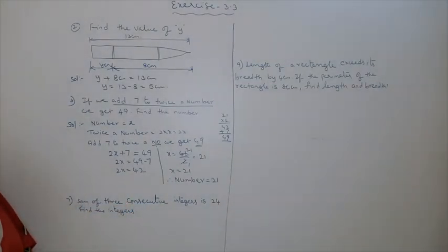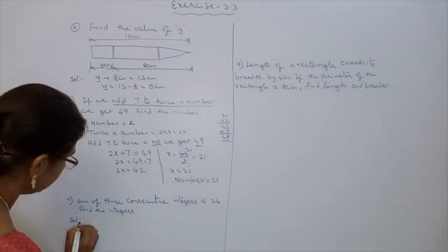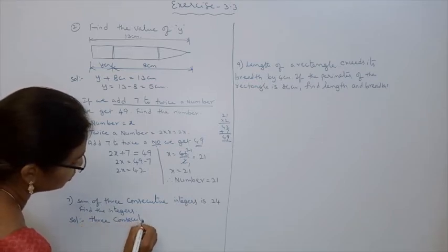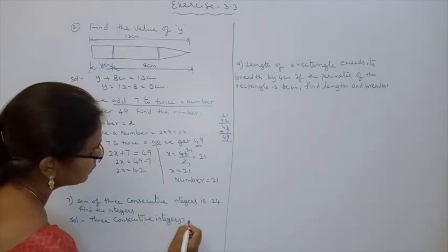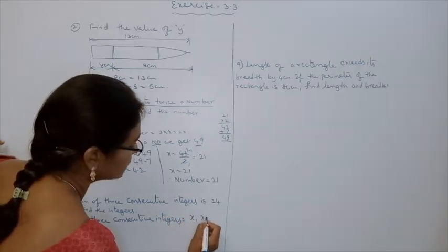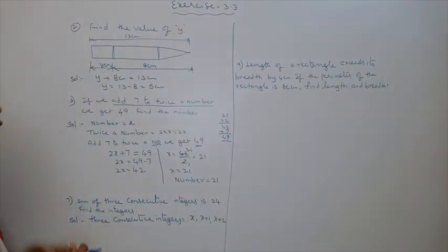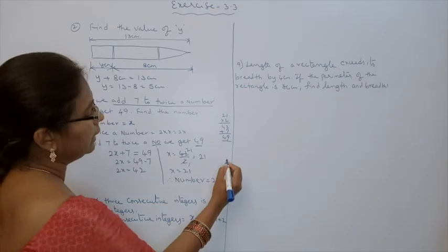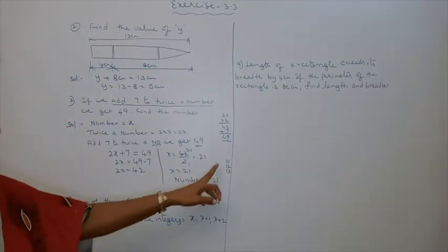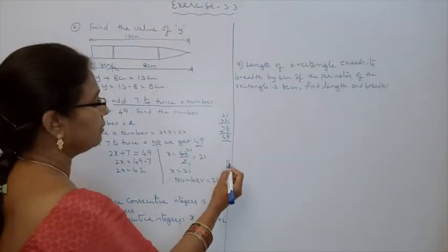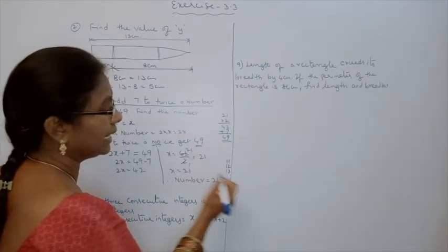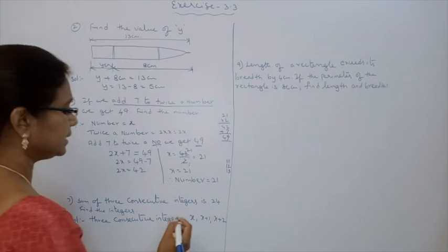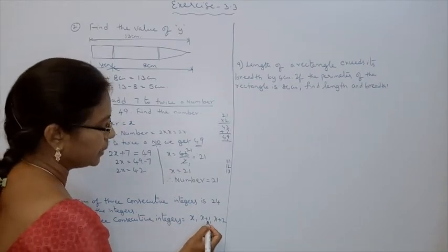For 3 consecutive integers, we assume the first as x, second as x plus 1, third as x plus 2. Suppose we don't know those 3 numbers, so we assume x, x plus 1, x plus 2. Why? For example, 11, 12, 13 are consecutive. If you add 1 to 11 you get 12; if you add 2 to 11 you get 13. So the unknown integers are x, x plus 1, x plus 2.